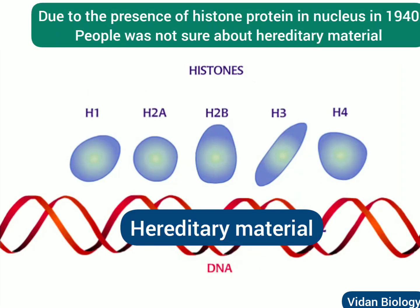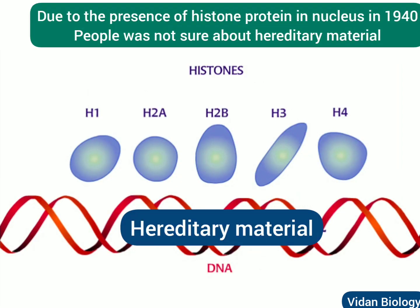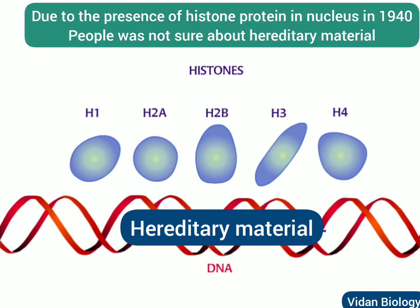The presence of histone proteins in the nucleus of higher cells was part of the debate in 1914 about which molecule — DNA or protein — is the hereditary material. Of course, DNA turned out to have that distinction.